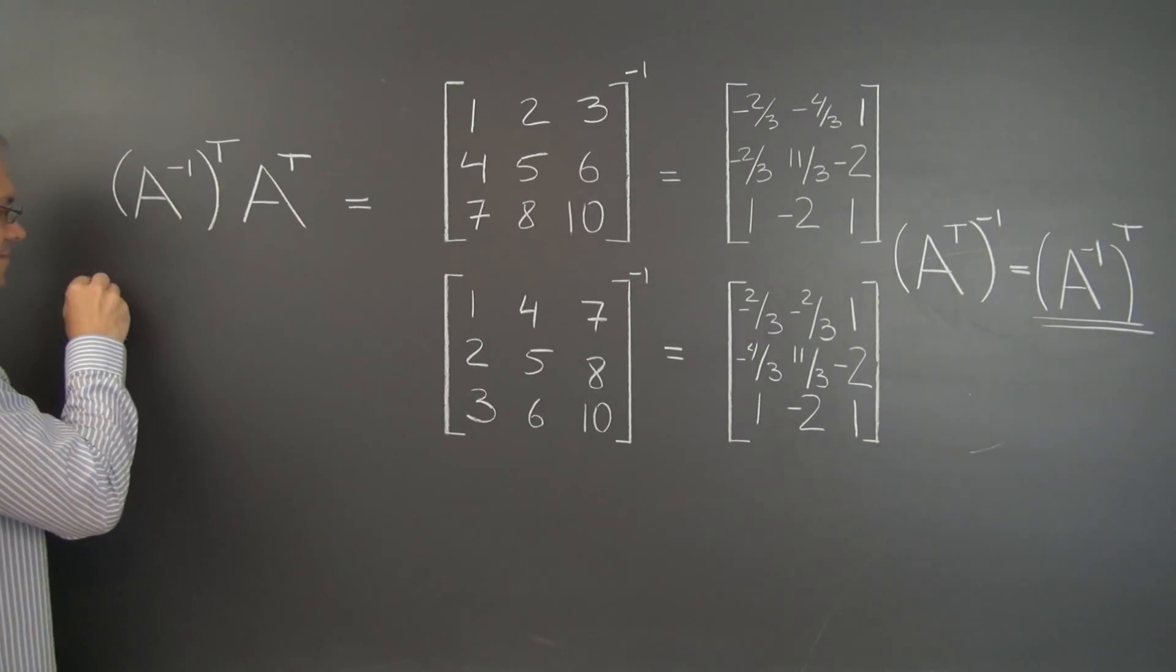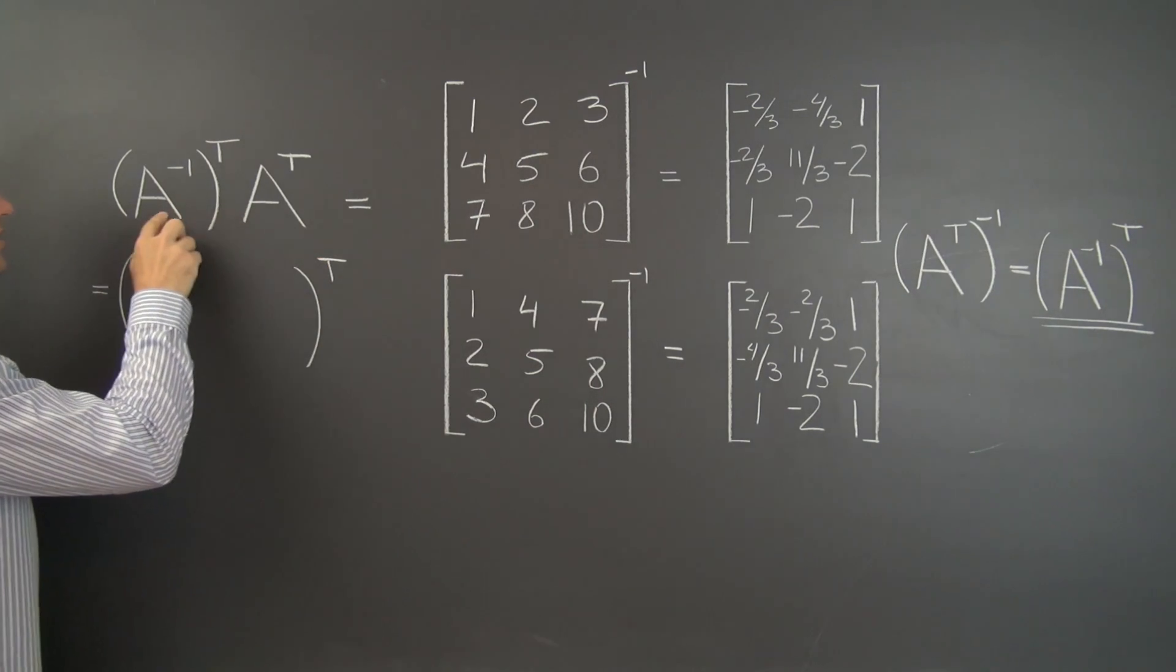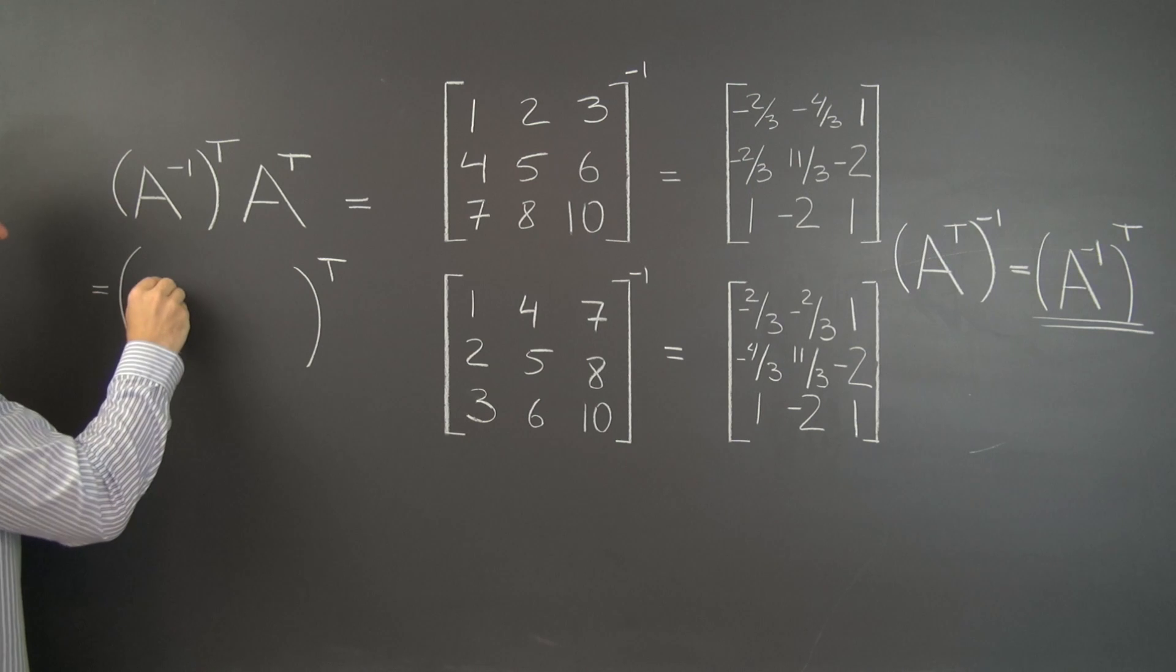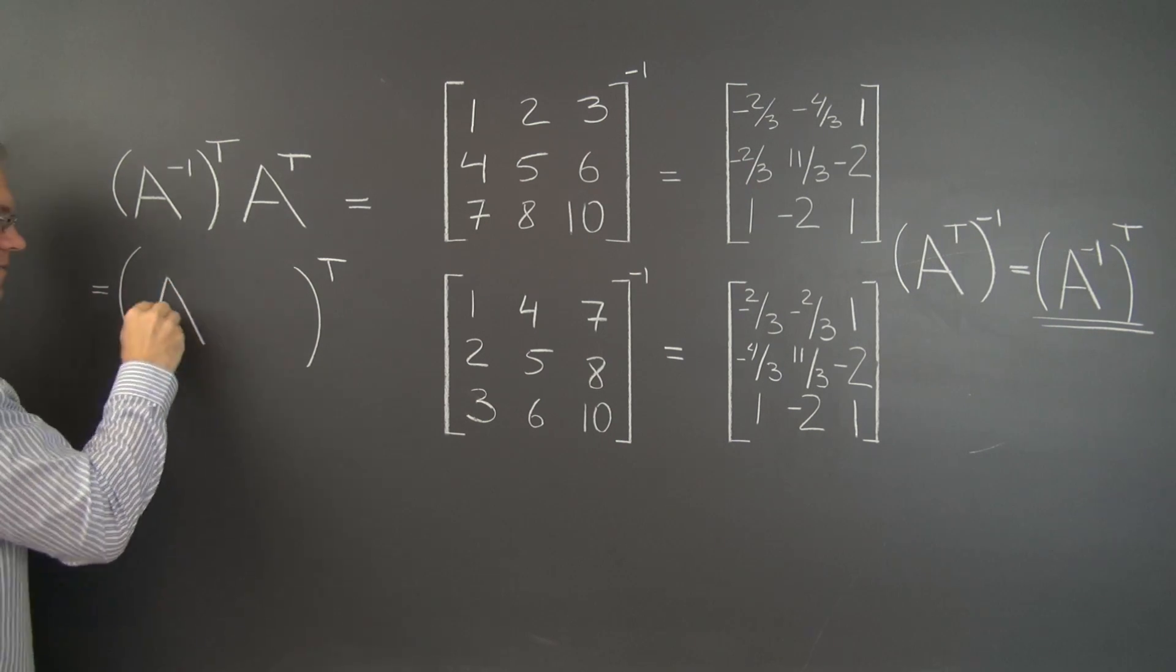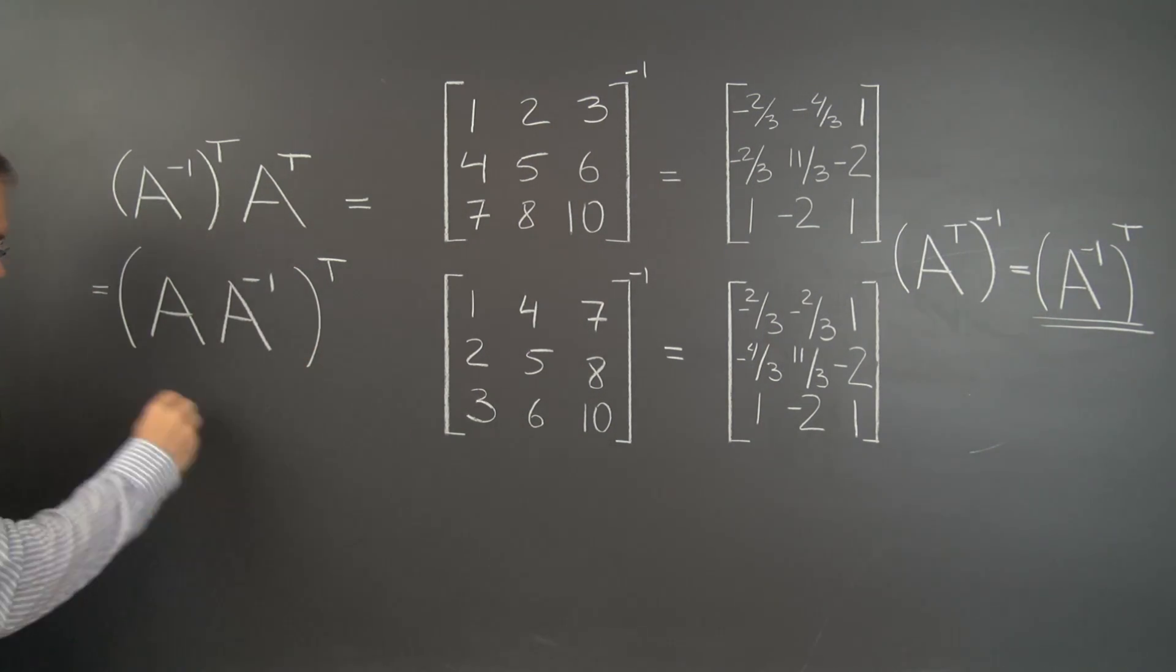So this product equals the transpose of the following matrix. A matrix is the product of these individual matrices in the opposite order. So it's A A inverse under the operation of the transpose.